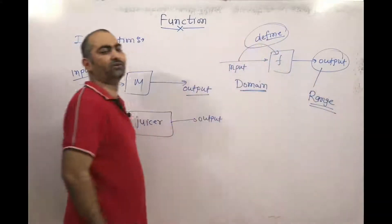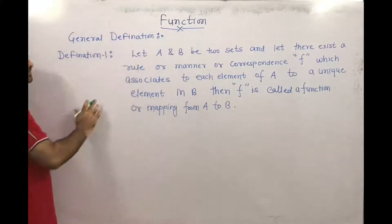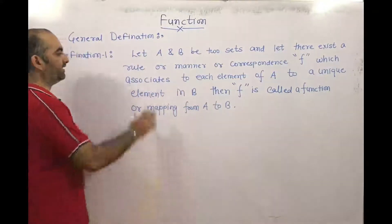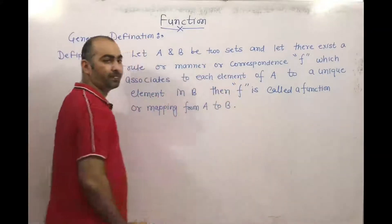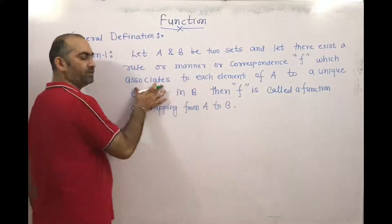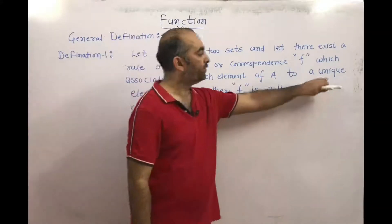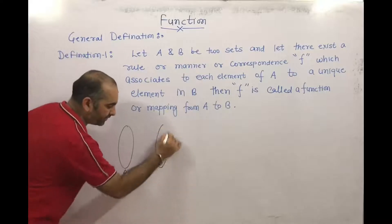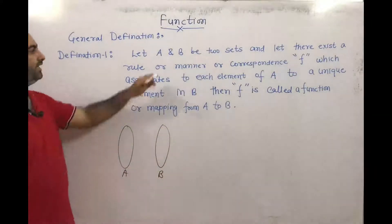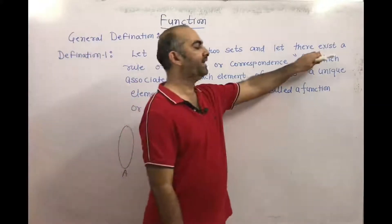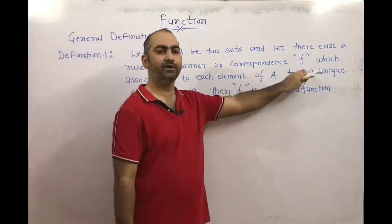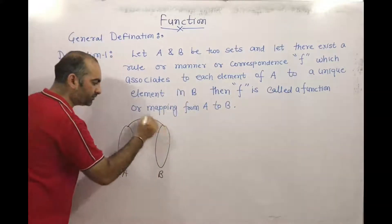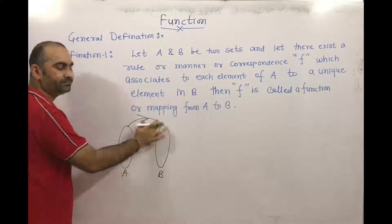So that is the function introduction — we discussed the general definition. Now Definition 1: Let A and B be two sets, and let there exist a rule or manner or correspondence F which associates to each element of A a unique element in B. So we have set A and set B, and F is a mapping going from A to B.